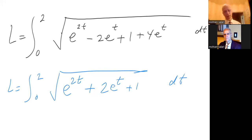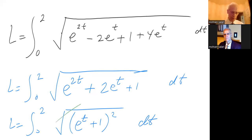Quantity squared dt, and I'm going to go ahead and write this as a perfect square. So L equals from zero to two, square root of e to the t plus one quantity squared dt. And of course I can now cancel this with this.